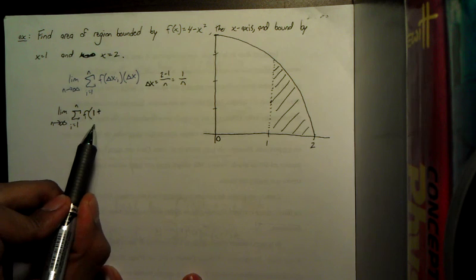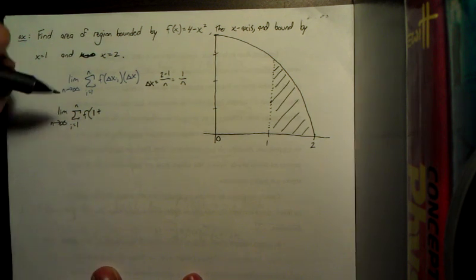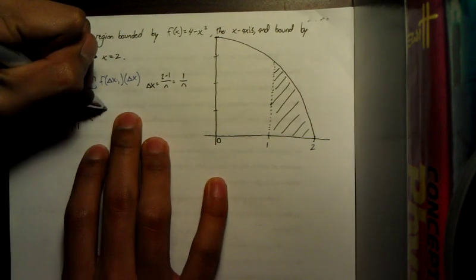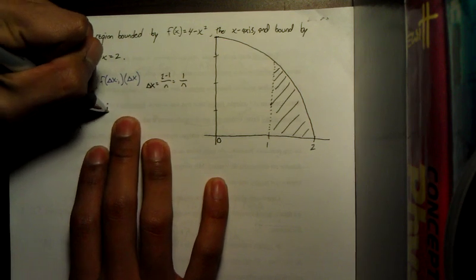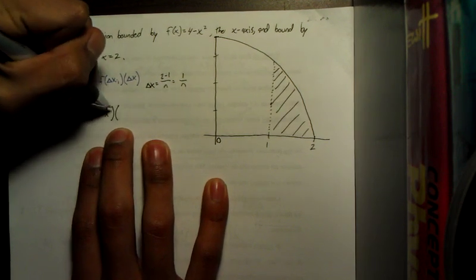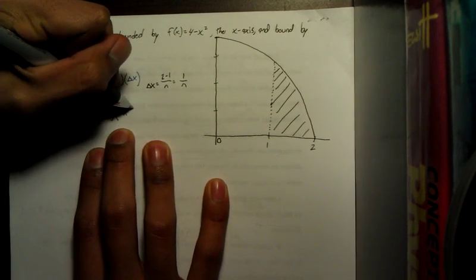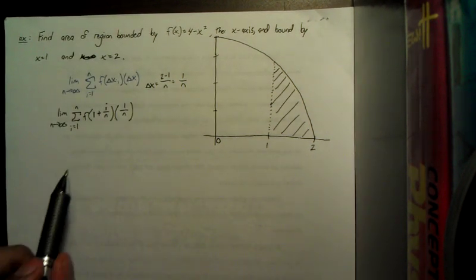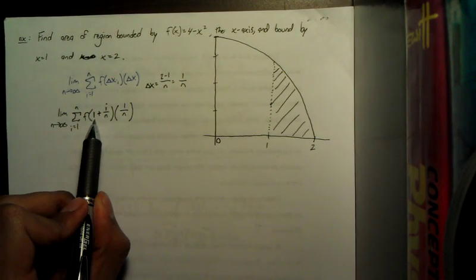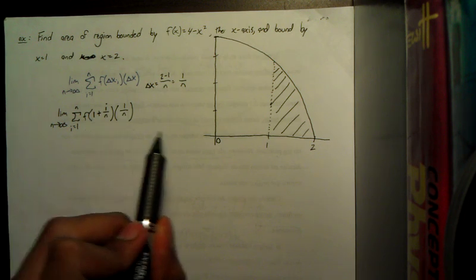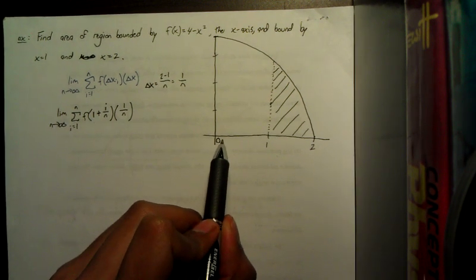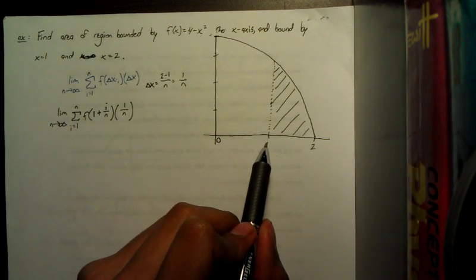So now we can put that in right here. So it's going to be 1 plus i over n times our change of x, which is 1 over n. This 1 came from the fact that we did not start at 0, so we've got to take into account that we're starting ahead already.